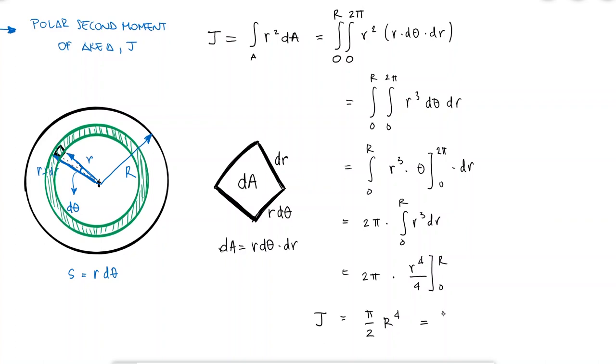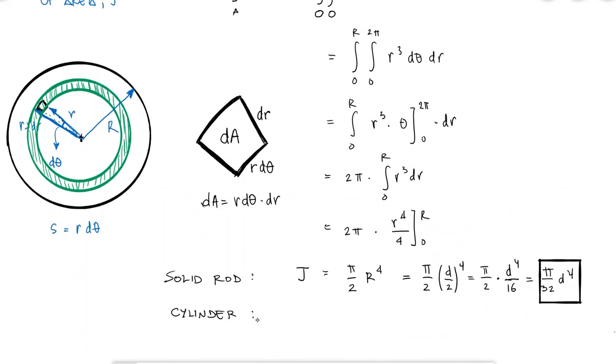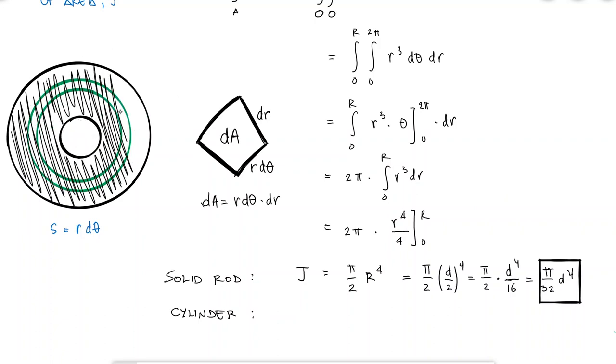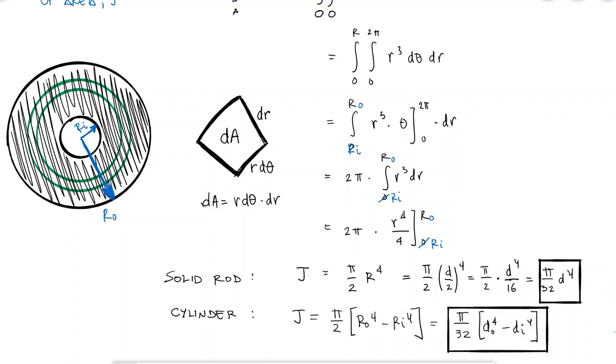In terms of the diameter, this expression would be pi over 32 diameter to the fourth, which is the polar second moment of area for a solid rod. If we were interested in calculating the polar second moment of area for a hollow rod or a cylinder whose cross-section would look like a ring that goes from the inner diameter Ri to the outer diameter Ro, only the second integral would change, going from inner radius instead of 0 to the outer radius, and resulting in the expression pi over 32 times outer diameter to the fourth minus inner diameter to the fourth. With this, we have an expression to calculate the shearing stresses for torsion as well as the expressions to calculate the polar second moment of area.